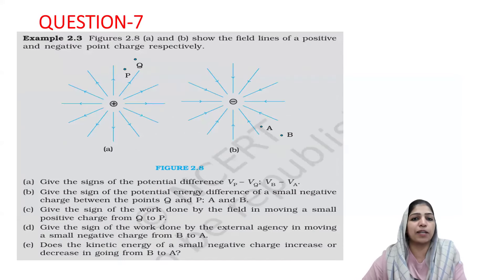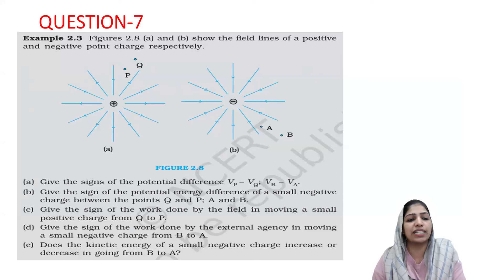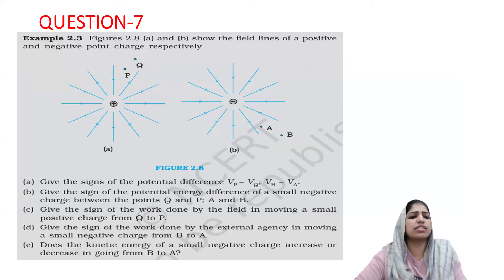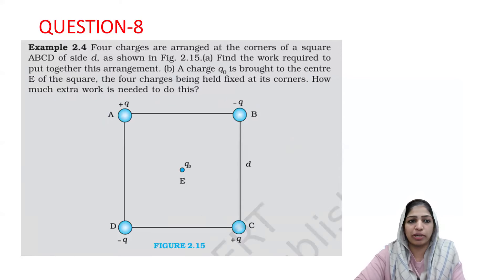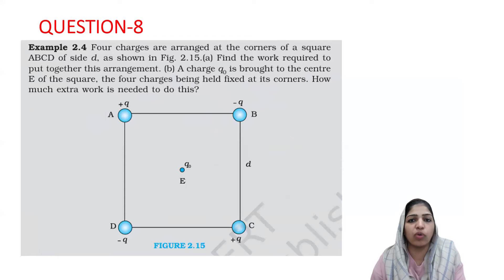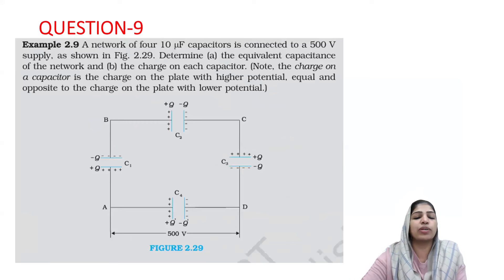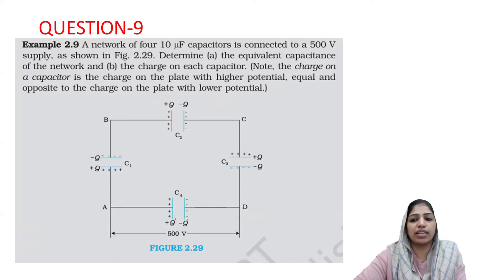Coming to the second chapter: the electric field lines are related to potential, work done, and energy. This is more of a theory question, and the same questions repeat without a single change in the question pattern. Question 2.4 covers work done and net potential calculation. Example 2.4 is the 8th question. The 9th question is about capacitors — the combination of capacitors. This is a very important question likely to appear in the board exam.